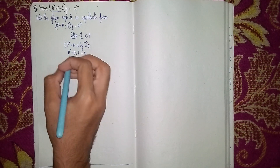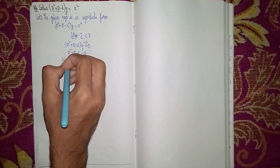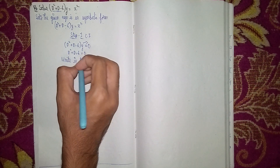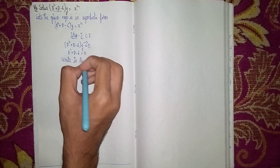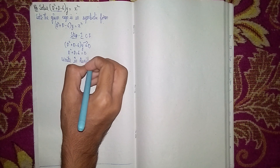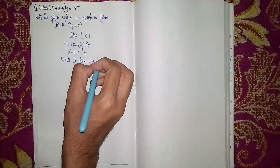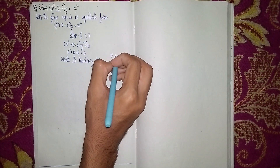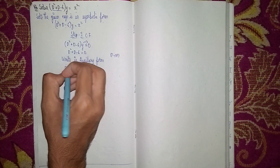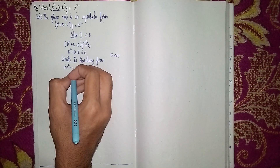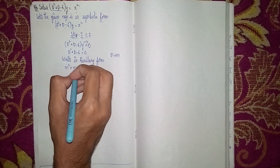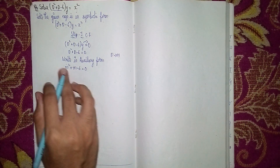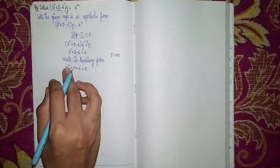Now write the equation in auxiliary form. In auxiliary form, instead of D we write m. So it becomes m² + m - 6 = 0. We will use the middle term splitting method here.